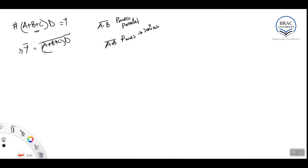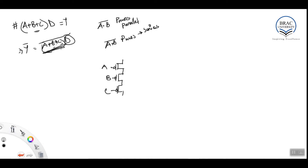Here, for a, b, and c the PMOS transistors will be in series since this is a NOR gate orientation. So we make three PMOS transistors in series, named a, b, and c. Now this whole thing is multiplied by d, which is in NAND orientation, so d is in parallel with the whole a-b-c series chain.